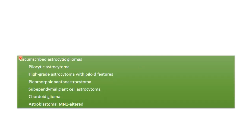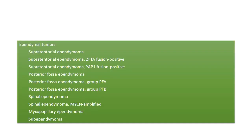Circumscribed astrocytic gliomas have been added in the recent WHO and pylocytic astrocytoma has been incorporated into this group. This group includes pylocytic astrocytoma, pleomorphic xanthoastrocytoma, subependymal giant cell astrocytoma (SEGA), cordoid glioma, and astroblastoma MN1 altered. Ependymal tumors can be supratentorial, posterior fossa, or spinal ependymomas.